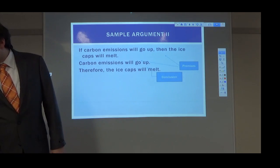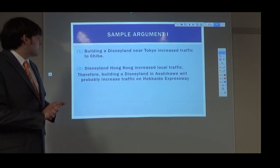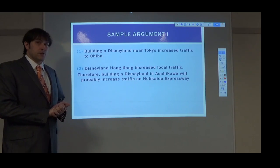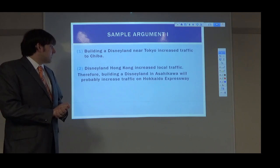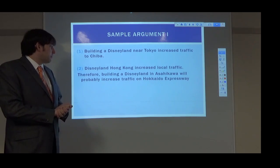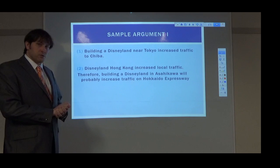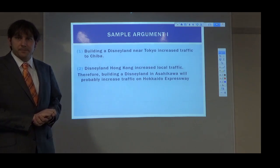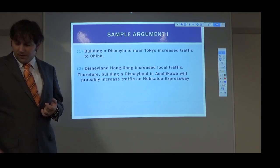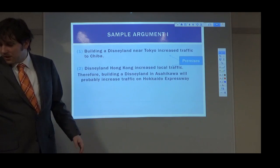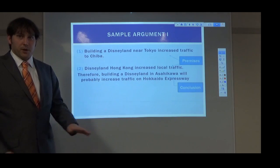Let's go on to one more. Building a Disneyland near Tokyo increased traffic to Chiba. Two: Disneyland Hong Kong increased local traffic. Therefore: building a Disneyland in Asahikawa will probably increase traffic on the Hokkaido Expressway. The premises are at the top, and the conclusion is at the bottom.